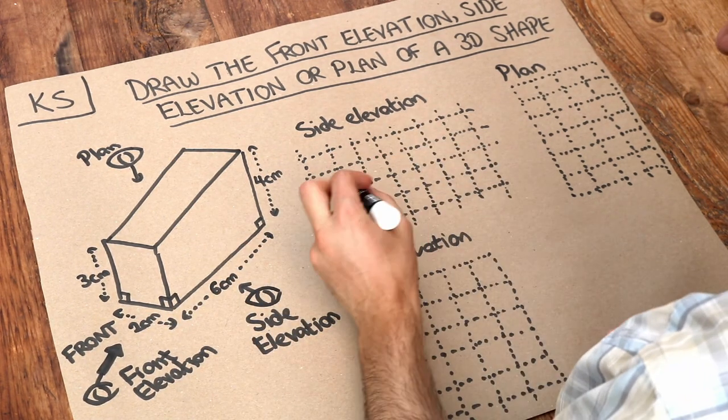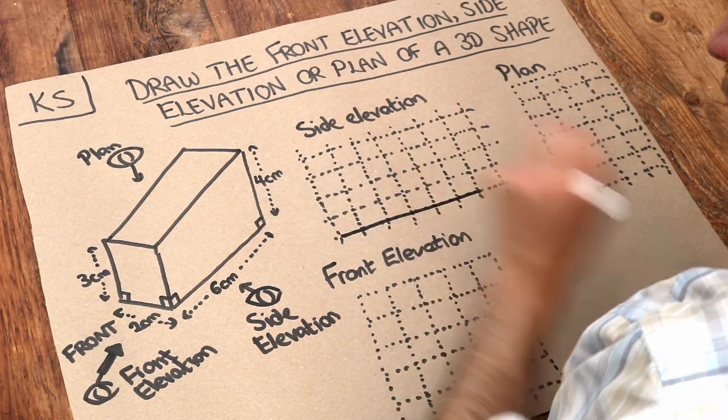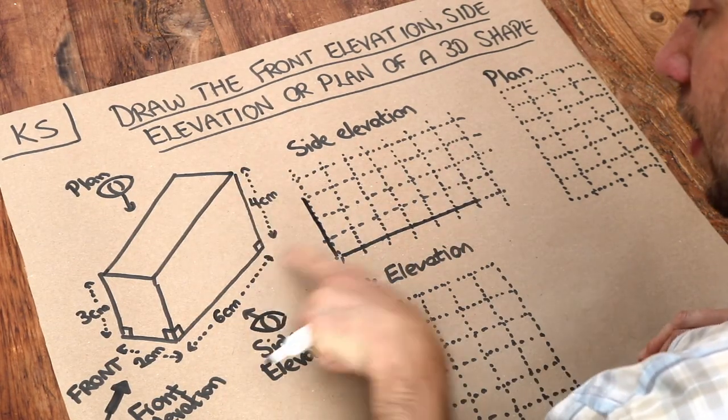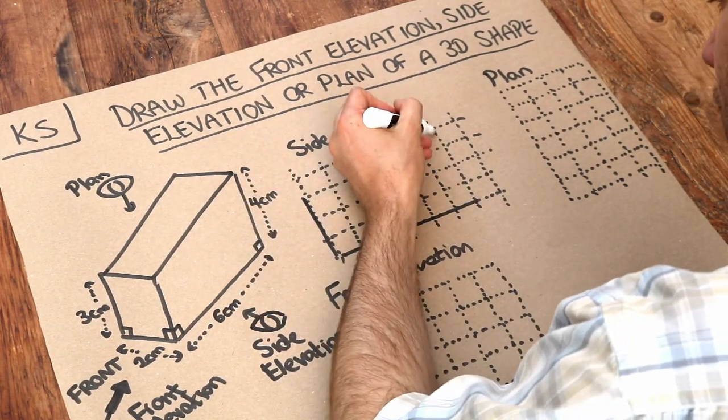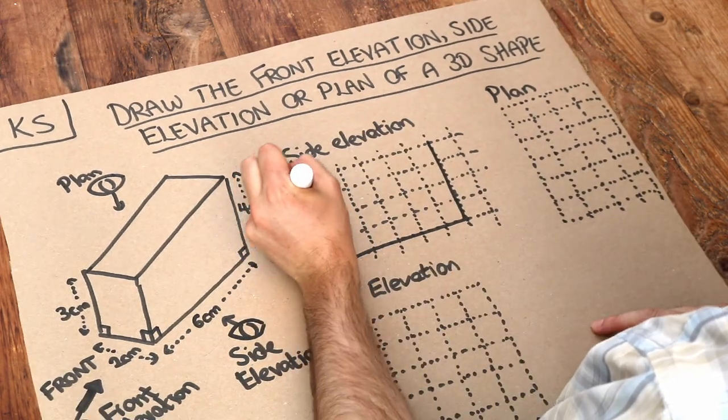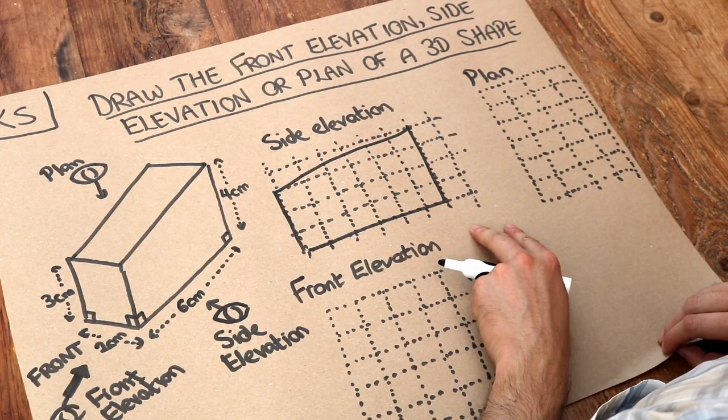So if this is a centimeter grid then we go six along like that and then we can see where it goes three up like this. So three up. On the other side it goes four up like that and then there's just a line connecting the two. So that would be the view from the side of the shape, the side elevation.